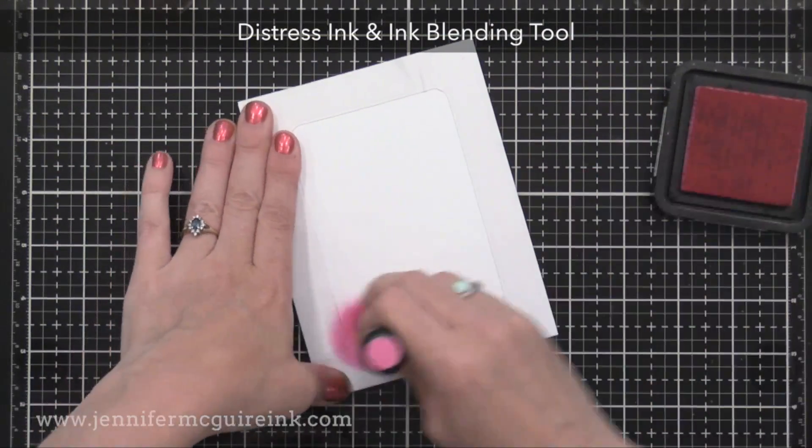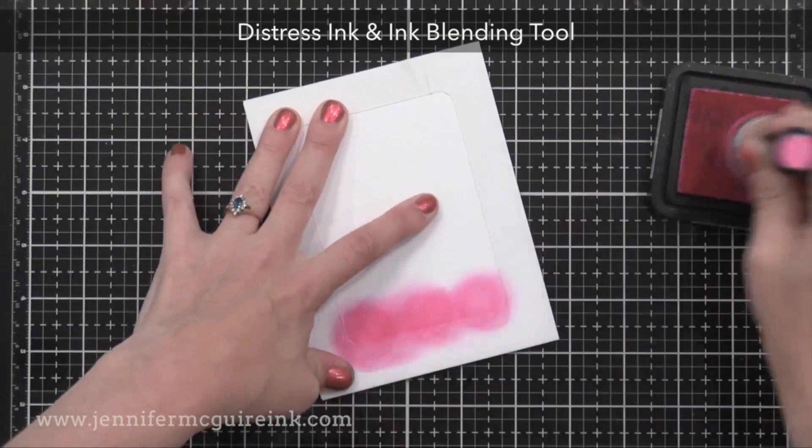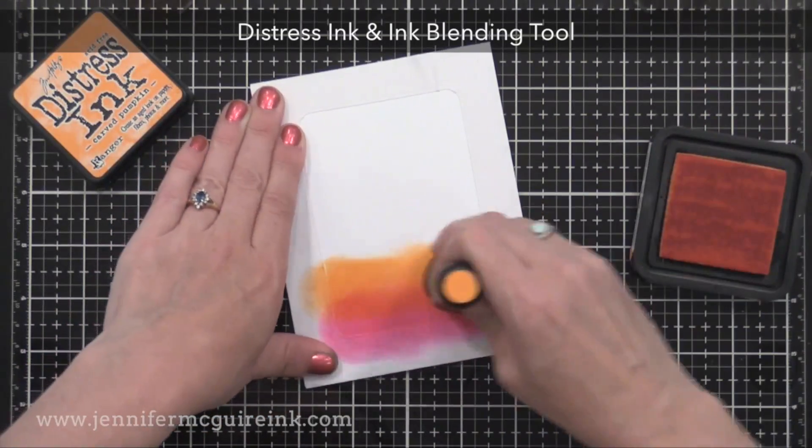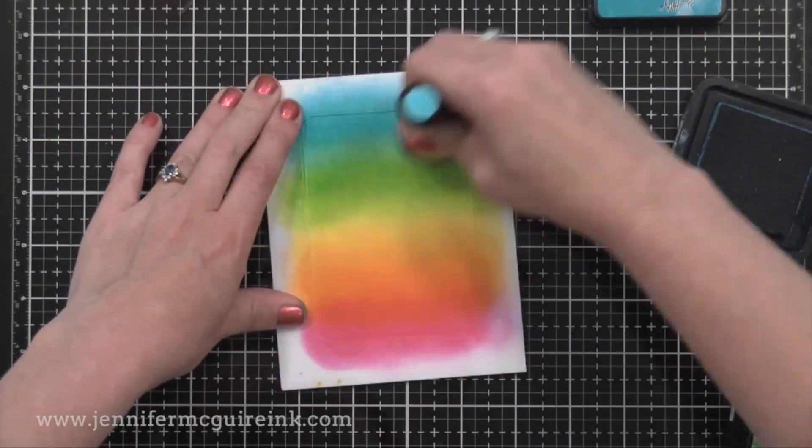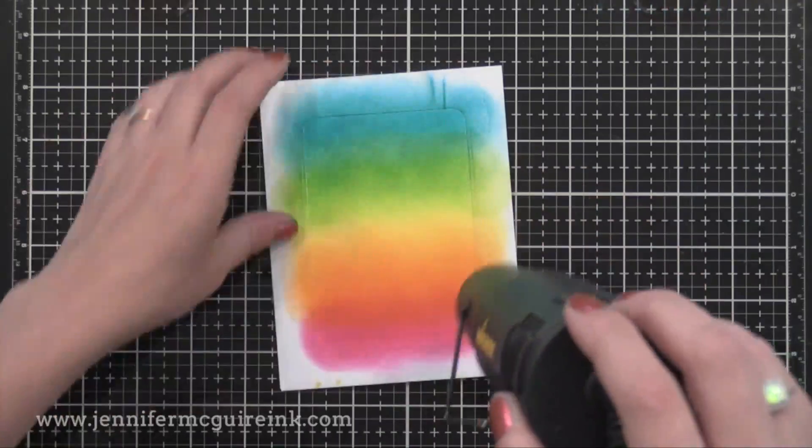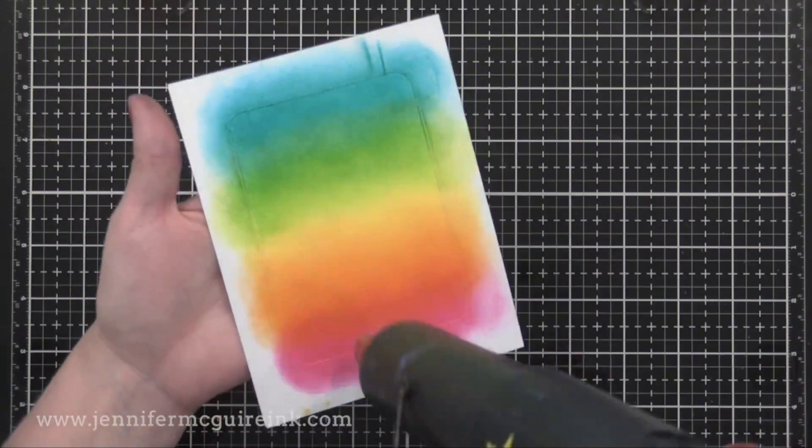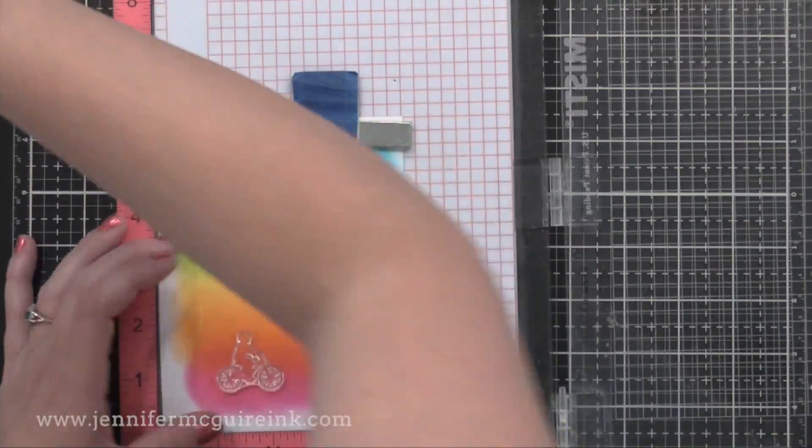Next, I'm going to apply color to this background. I'm using Distress Ink and an ink blending tool to create a rainbow effect. But you could do anything you want. You could even use patterned paper here. You could use colored paper, anything you want. But I thought the rainbow would be a neat effect.